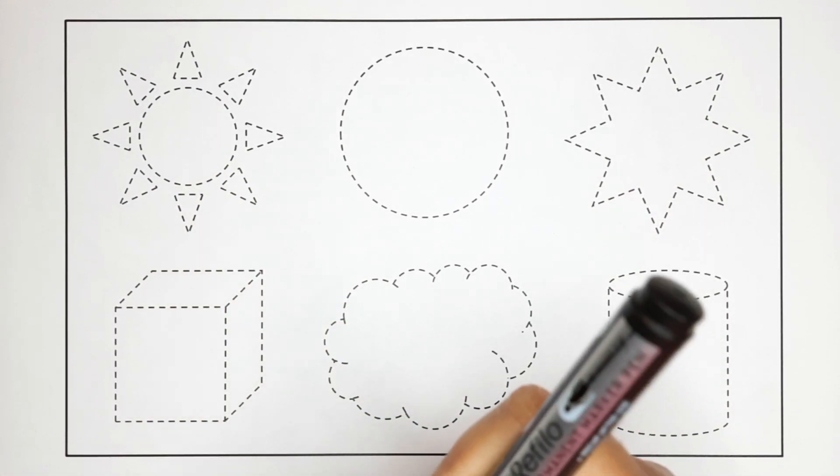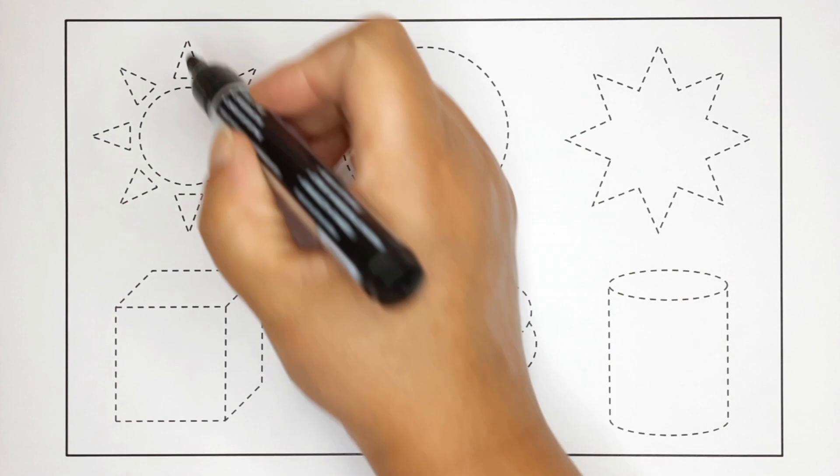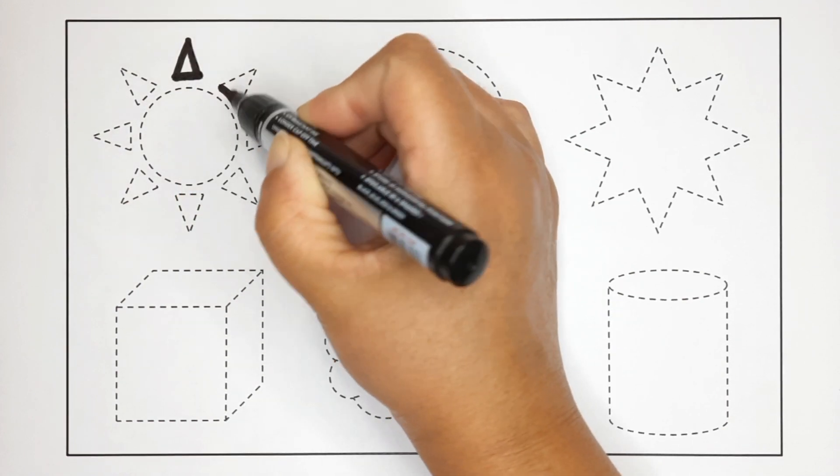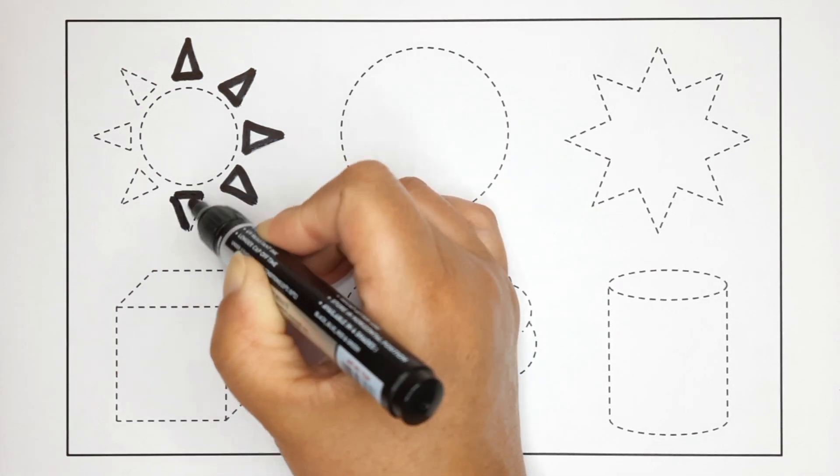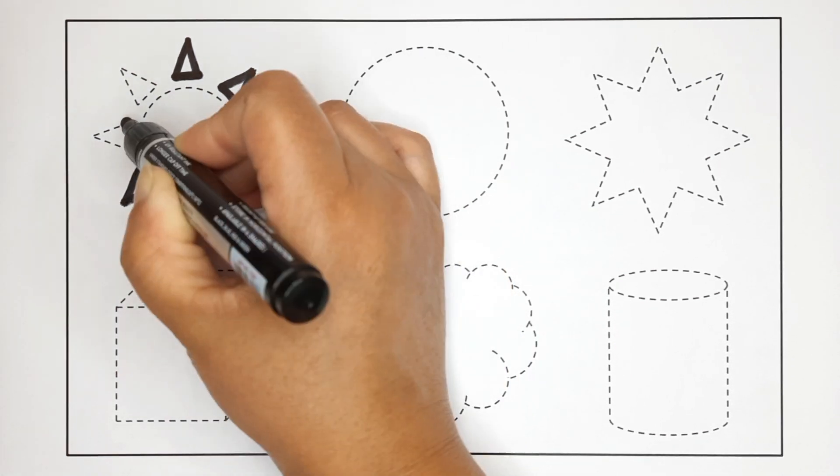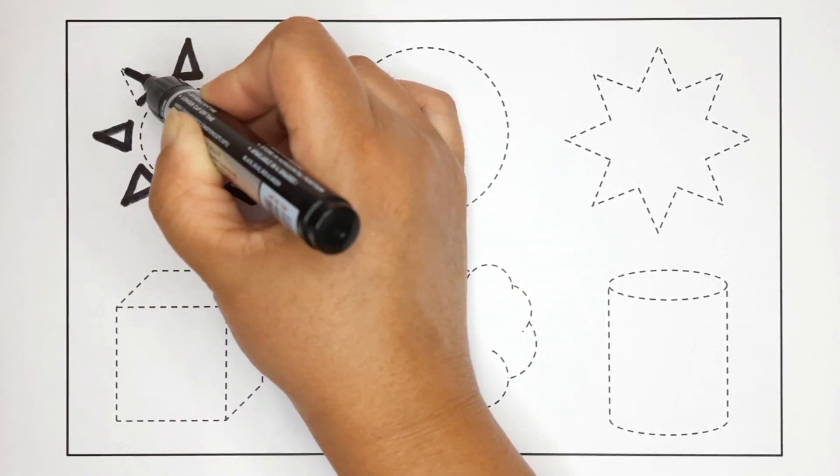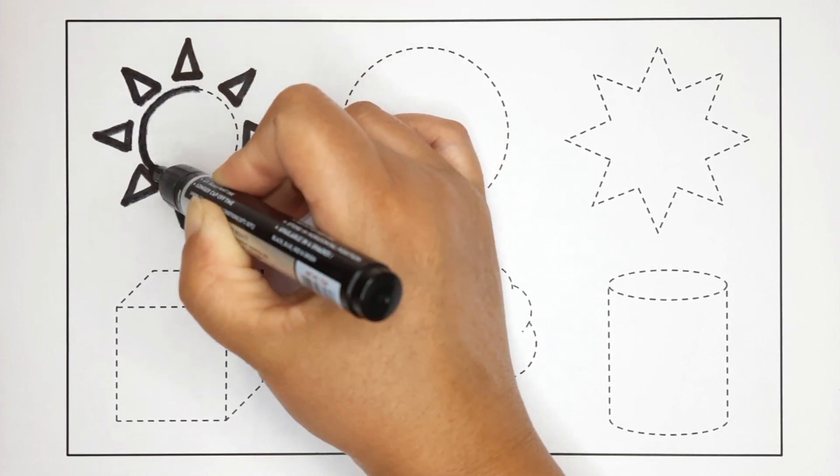Now let's draw the shape. Sun, Sun, This is sun.